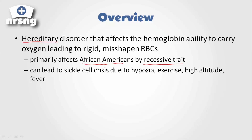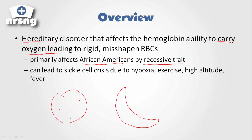Sickle cell disease affects the hemoglobin's ability to carry oxygen. The hemoglobin becomes less capable of carrying oxygen, and that leads to misshapen RBCs. Normally RBCs are going to be nice and round, but with sickle cell disease the hemoglobin is less capable of carrying oxygen, so the RBCs become misshapen — they actually become sickle-shaped.